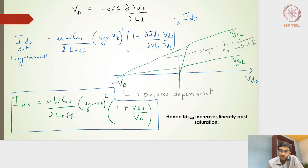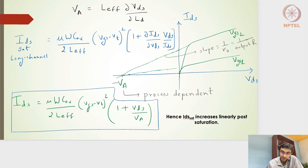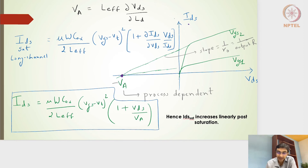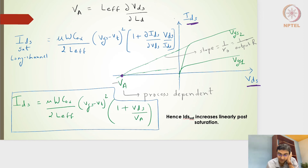This is analogous to the BJT amplifier: if we draw the output collector current against the collector-emitter voltage, the slope extended back to the negative VCE axis gives the Early voltage. Similarly for this NMOS transistor, drawing IDS against VDS — especially for a short channel device — reveals a defined positive slope that, when extended to the x-axis, meets at a point called VA, the Early voltage.